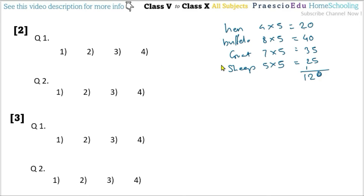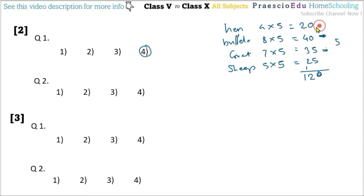Question 1: how many more people keep buffalo than goat? Buffalo = 40, goat = 35, difference = 5 — option number 4. Question 2: what is the total number of people keeping hen as well as sheep? Hen = 20, sheep = 25, so 20+25 = 45 — option number 4.